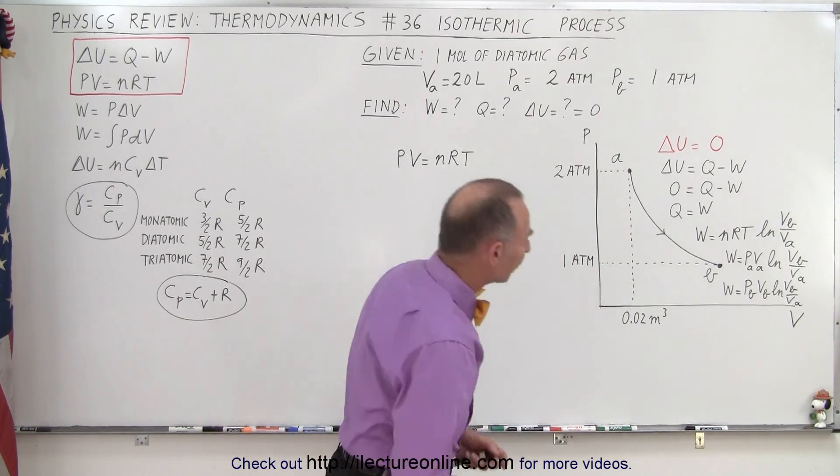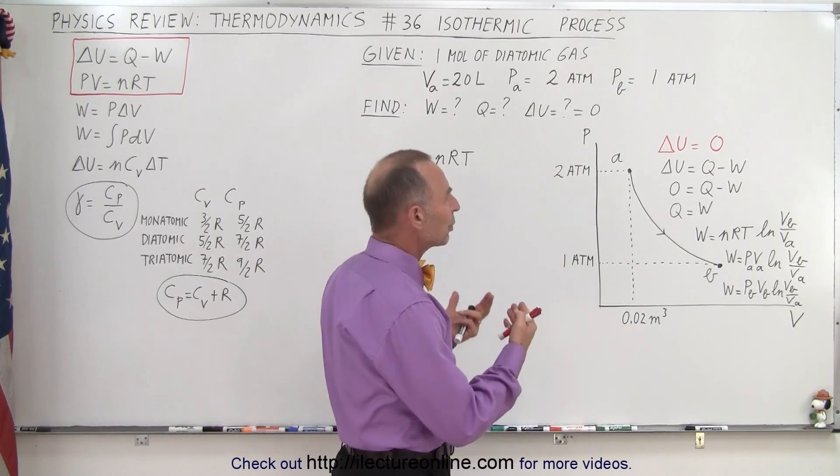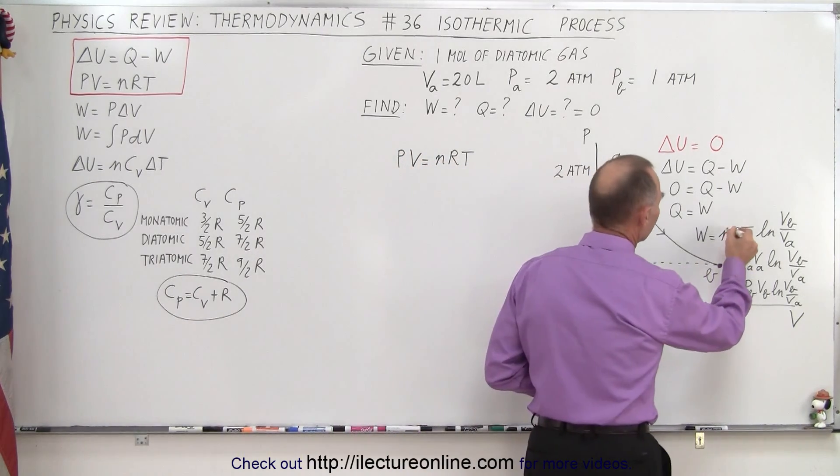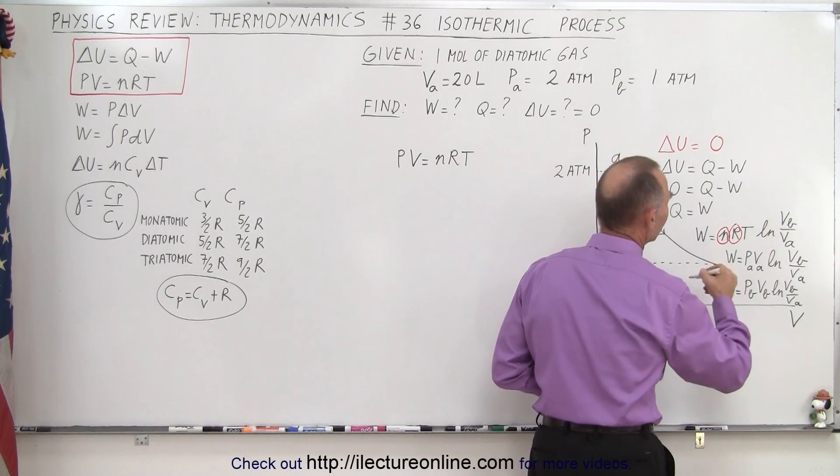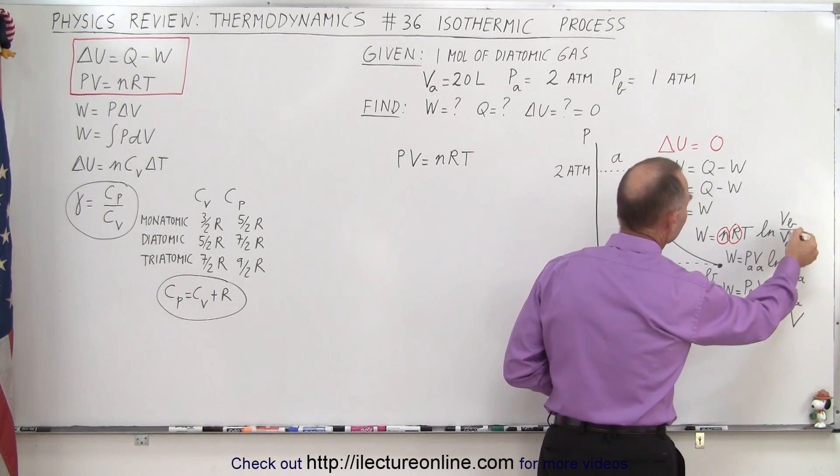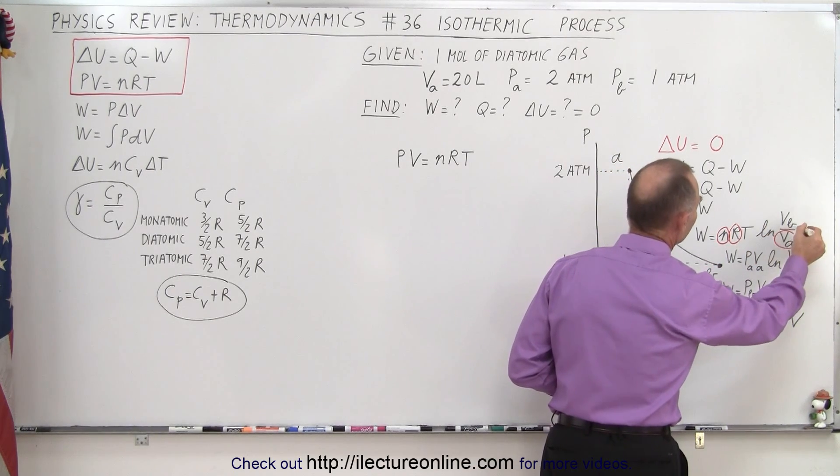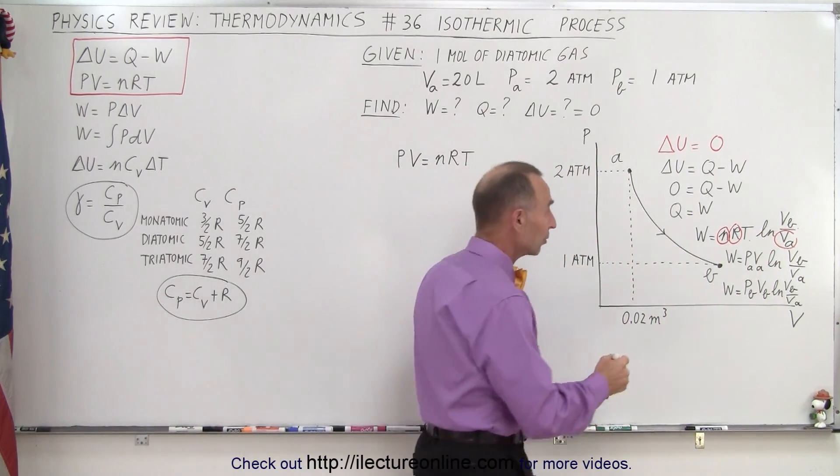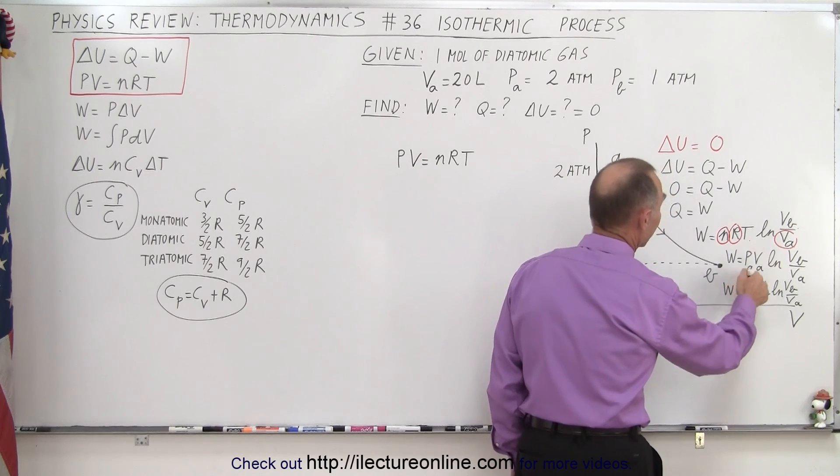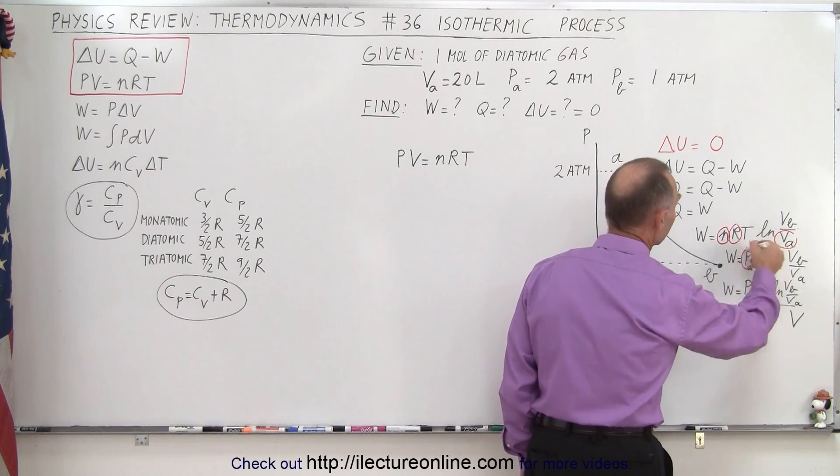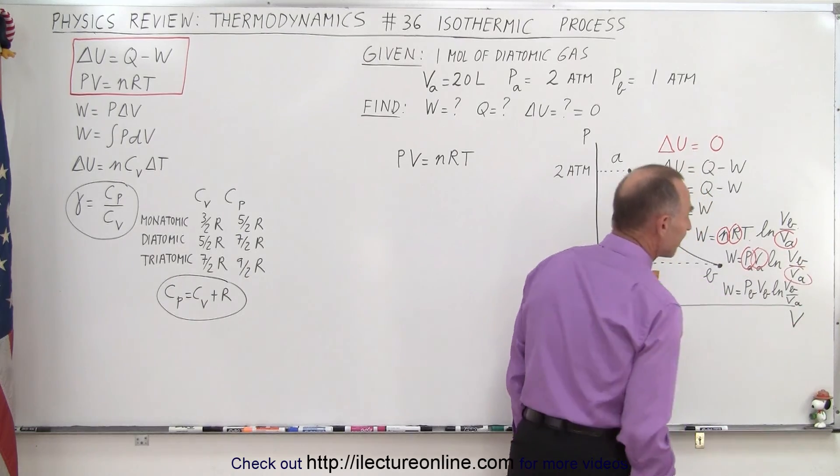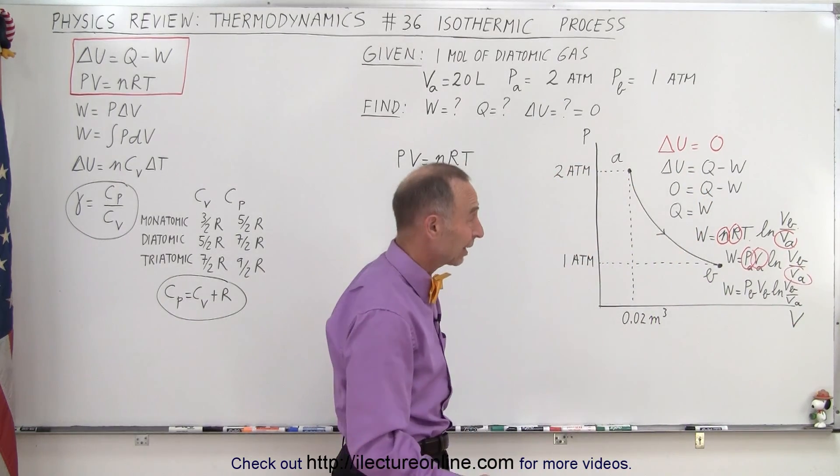A good thing to do is to figure out in the equation what we know and what we don't know. So here we know the number of moles. R is a constant, so that's known. We know the volume at A, but we don't know the volume at B and we don't know the temperature. So there's two unknowns in that equation. The next equation: we know both the pressure and volume at A, so they're both known. We know the volume at A, but we don't know the volume at B.